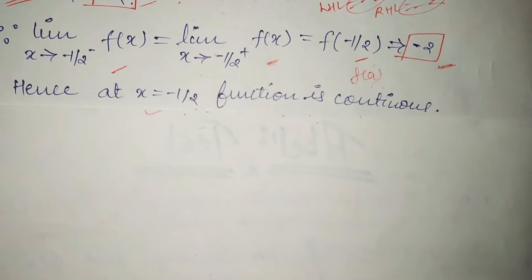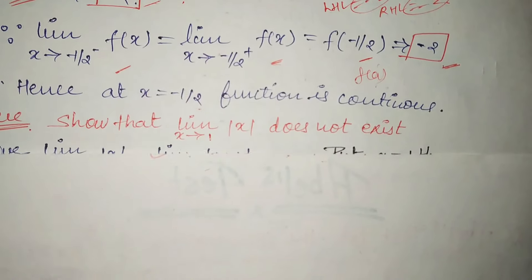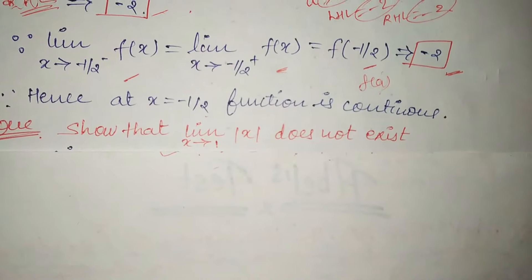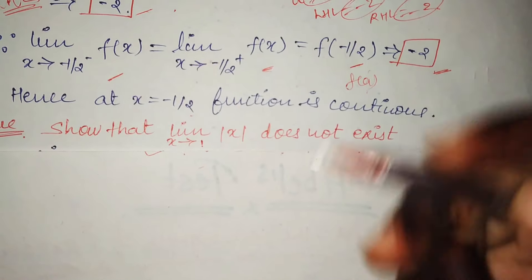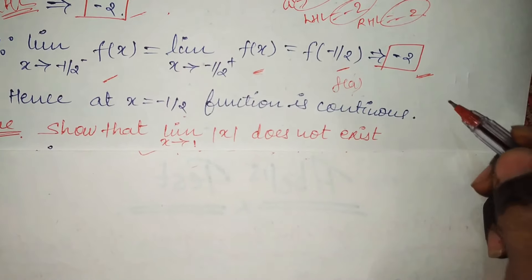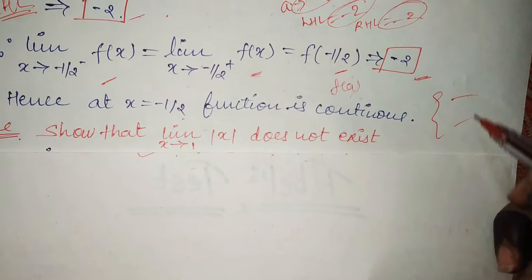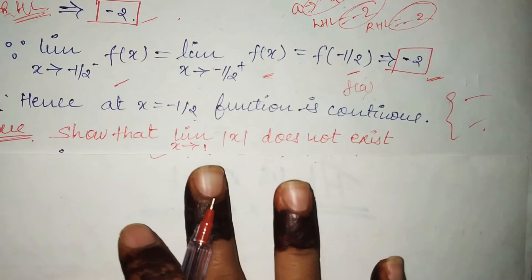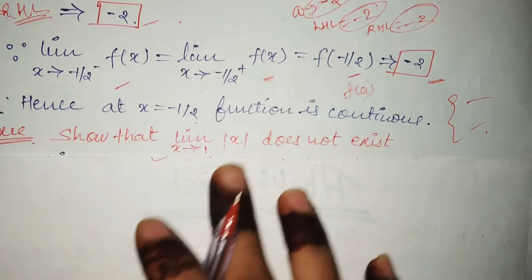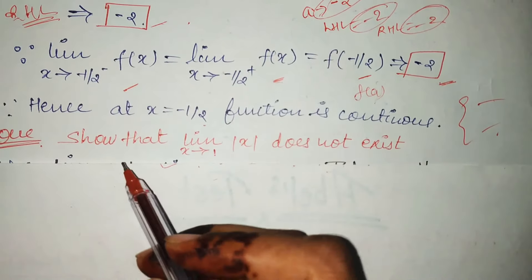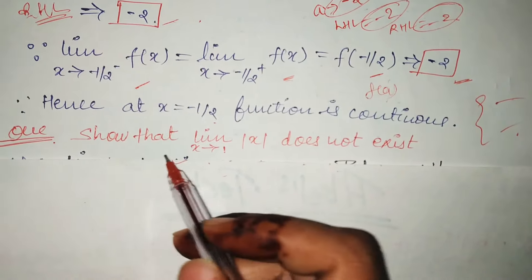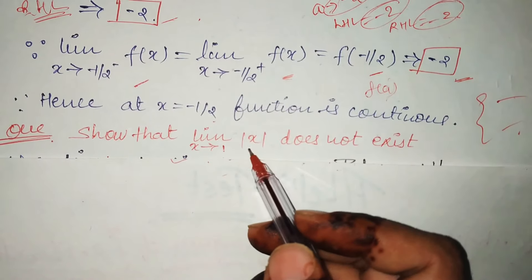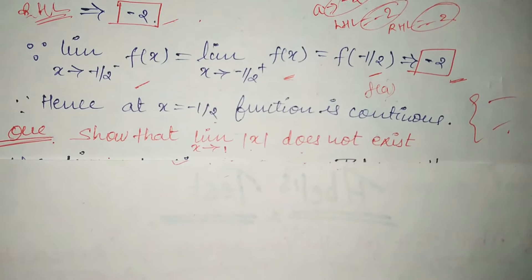Now let's move to another question. Students, notice that the first question's format gave you two values. But you may also get this type of question: 'Show that limit x tends to 1, mod x does not exist.'